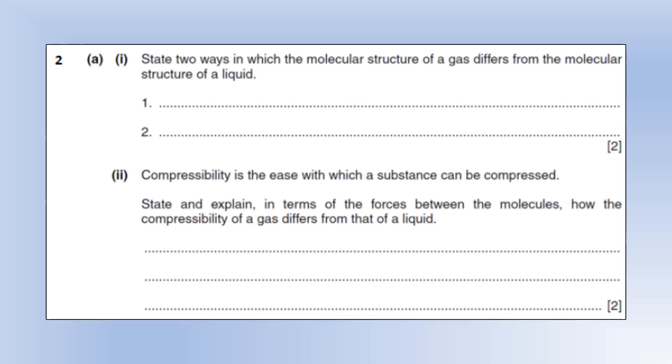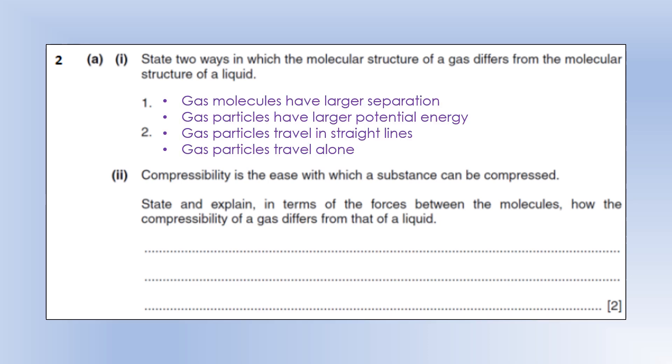State two ways in which the molecular structure of a gas is different from the molecular structure of a liquid. Well, there's more than two, so let's take a look at them. So there's much larger separation of molecules in a gas. The gas particles have much larger potential energy, technically electric potential, but potential usually suffices here. Gas particles travel in straight lines, and then gas particles travel alone. So molecules in a liquid tend to clump together. So even though they're free to move, they sort of clump together.